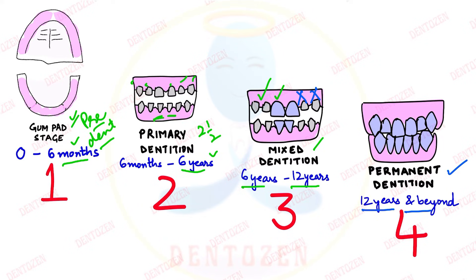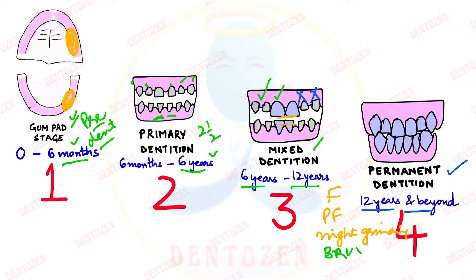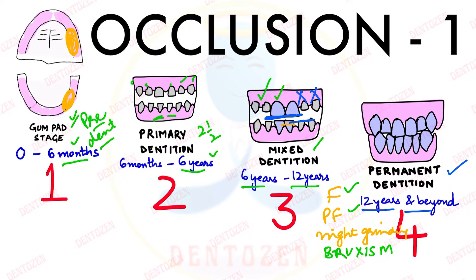During all these periods, there must be some type of contact between the maxillary and mandibular teeth for them to carry out various functions. Para-functional movements also occur — for example, night grinding of teeth. Some people grind their teeth while sleeping, and this habit is called bruxism. During all these functional and para-functional movements, the contact relationship between the maxillary and mandibular teeth is called occlusion.